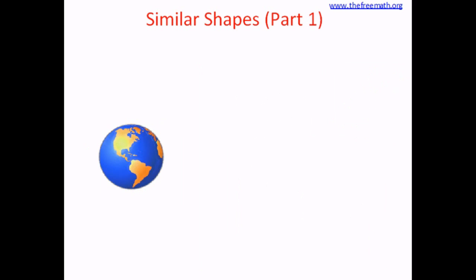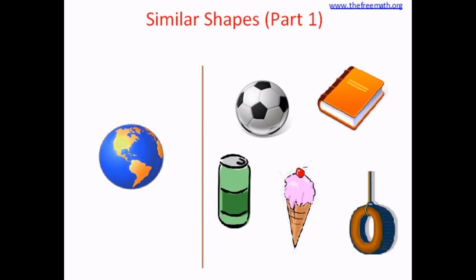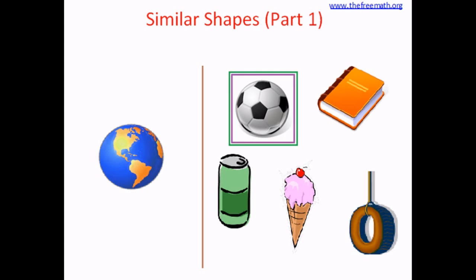Let's see one more thing. Here is a globe. Now what does this globe look like? Does it look like an ice cream? No. Does it look like a tire? No. How about a ball? Does the globe look like a ball? Yes. The ball and the globe are similar shapes. These two are similar shapes.